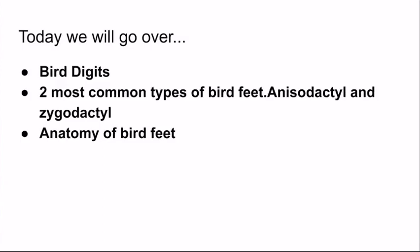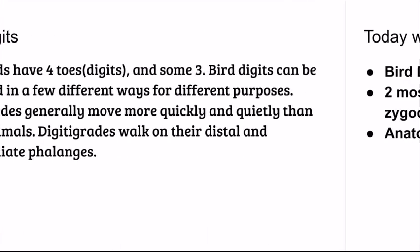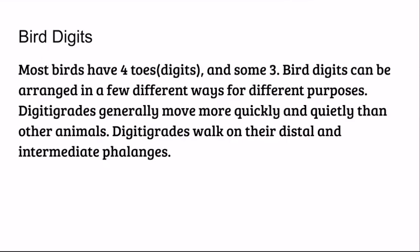Let's talk about bird digits. Most birds have four toes or digits, and sometimes three. Birds are considered digitigrades, which means they walk on toes, not feet. Bird digits can be arranged in a few different ways for different purposes. Digitigrades generally move more quickly and quietly than other animals. They walk on their distal and intermediate phalanges — the bones that make up digits.